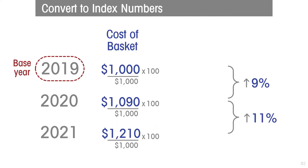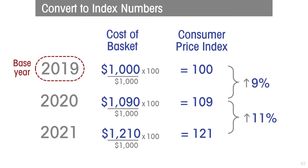The next step is to multiply all of those results by 100 to give our index a base of 100. Now we have converted the cost of the basket to an index number called the consumer price index. The relative change between the values for different years remains the same — the index rises by 9% up to 2020 and by 11% up to 2021. Statistical agencies publish the consumer price index, from which they calculate the measure of inflation. The consumer price index for the base year is always going to be 100.